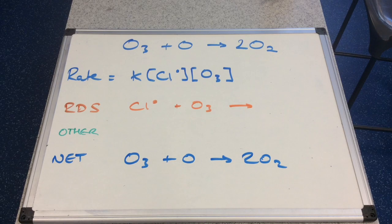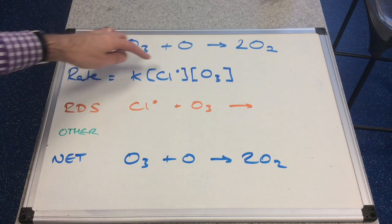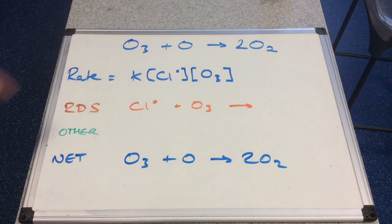And again, determined experimentally, rate equals K, the concentration of a chlorine radical. Remember, Cl dot is a chlorine radical, and multiplied by the concentration of O3.